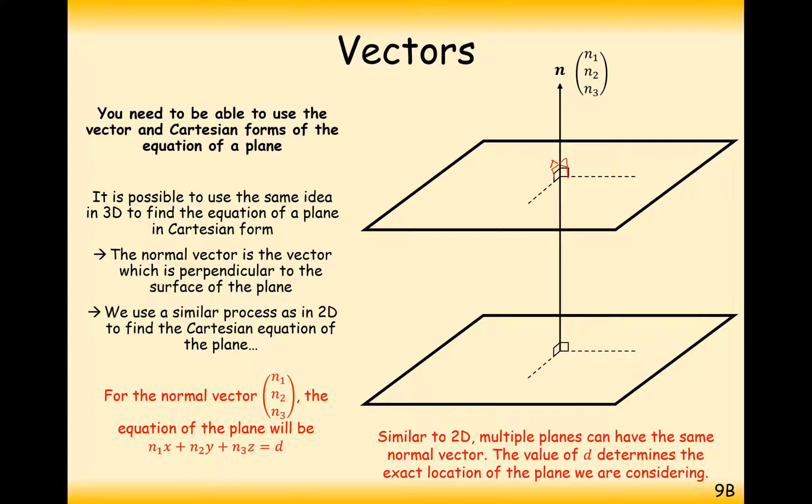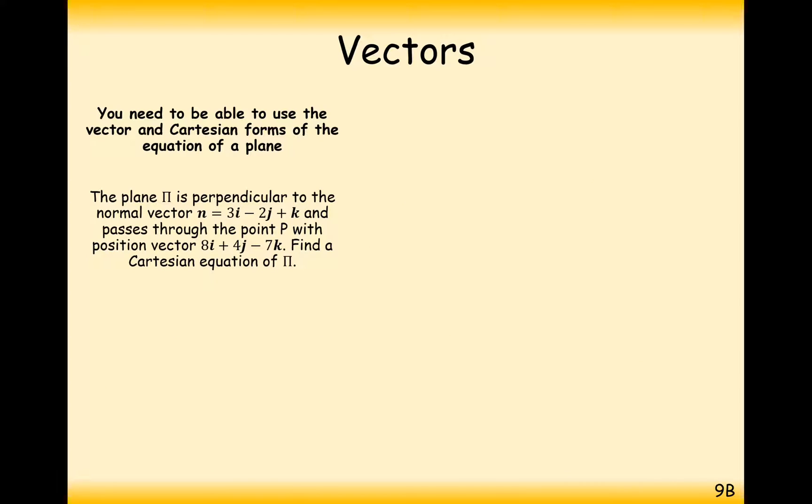The value of d determines the exact location of the plane we're considering. To briefly describe it, the higher this d value is, the further away your plane is from the origin. So, if d is zero, then your plane is going to go exactly through the origin. If your d value is massive, then it's going to be nowhere near the origin.